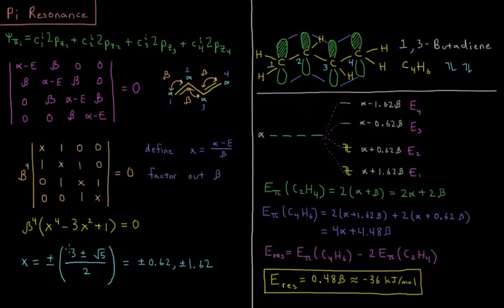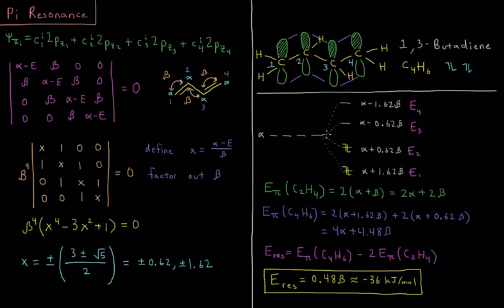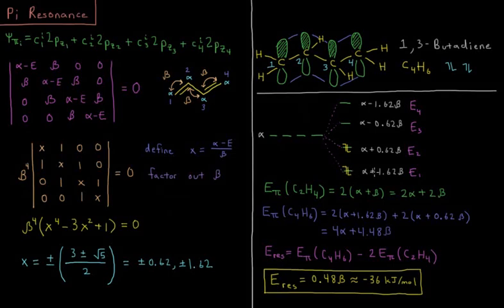That gives us the following energy level diagram once we remind ourselves that x is alpha minus E over beta. We get starting out at our energy of the isolated pz orbitals is alpha. So we have one that is alpha plus 1.62 beta in the lowest energy orbital, alpha plus 0.62 beta, alpha minus 0.62 beta, and alpha minus 1.62 beta. For our four orbitals, we put four orbitals in and we got four energies out.